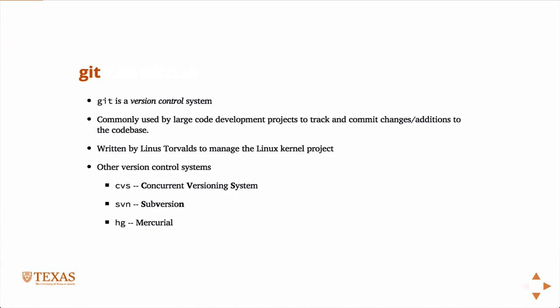If you had a career in software development, you'd almost certainly be expected to know Git or some other version control system, although Git is the most ubiquitous now. Once you have some knowledge of how to use it, you'll see the usefulness of it, and you may choose to use it for version controlling other things besides software. For example, I use it all the time to track changes to papers I'm writing.